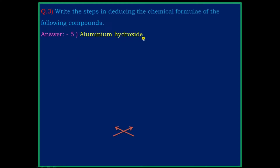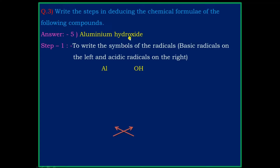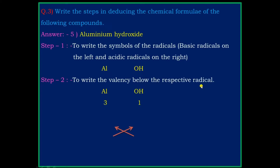Question 5: Aluminium Hydroxide. Step 1: write the symbol of the radical — basic radical on the left and acidic radical on the right. The symbol of aluminium is Al and the symbol of hydroxide is OH. Step 2: write the valency below the respective radicals — the valency of aluminium is 3 and the valency of OH is 3.